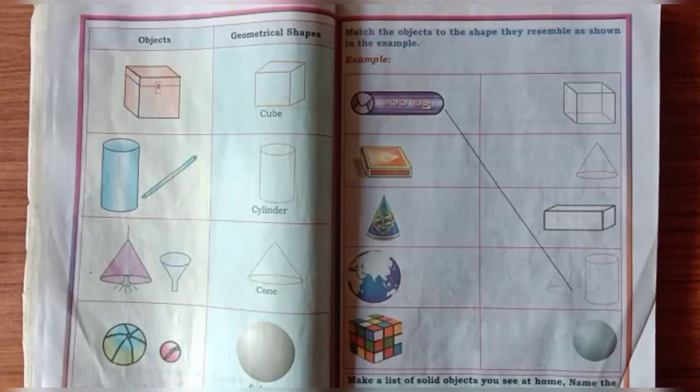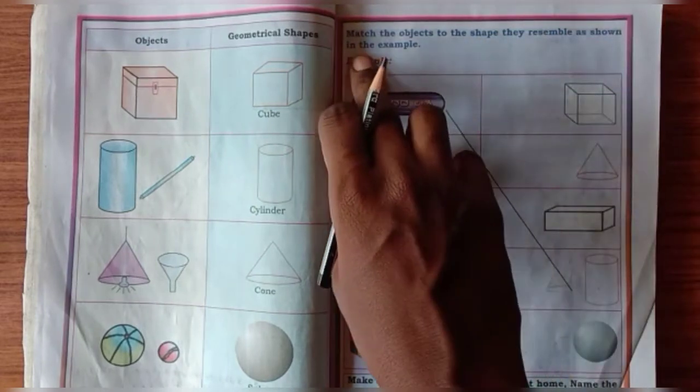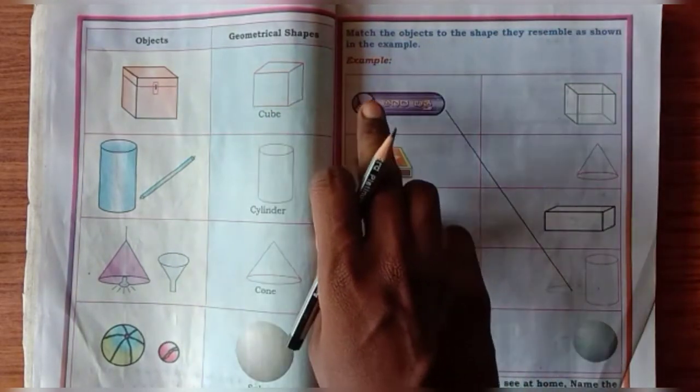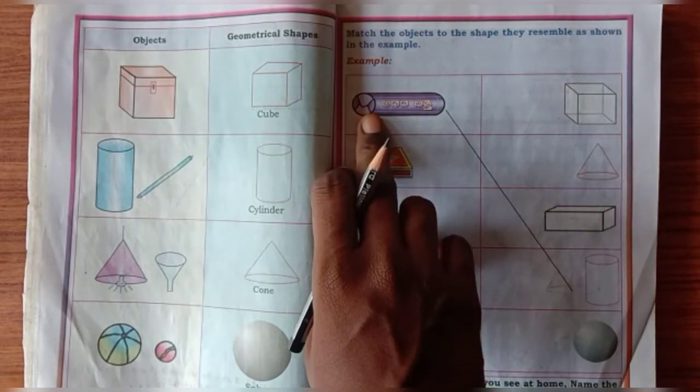Next, match the object to the shape they resemble as shown in the example. First one, you have to correctly match the shape.